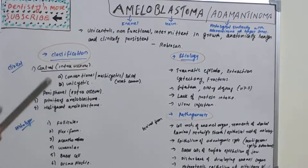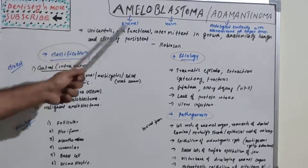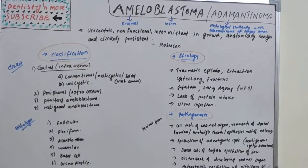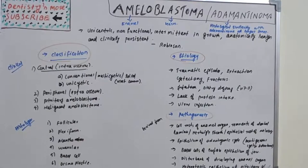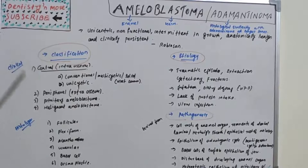Robinson defined ameloblastoma as unicentric, non-functional, intermittent in growth, anatomically benign, and clinically persistent. We can classify it under two headings: clinical classification and histological classification.